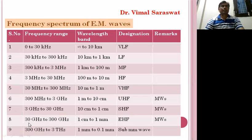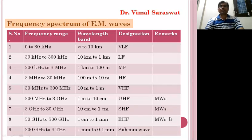The next wave ranges from 30 GHz to 300 GHz in frequency and from 1 cm to 1 mm in wavelength. This wave is the extremely high frequency wave. So ultra high frequency, super high frequency, and extremely high frequency waves are known as microwaves. This means microwaves range from 300 MHz to 300 GHz in frequency and from 1 m to 1 mm in wavelength.